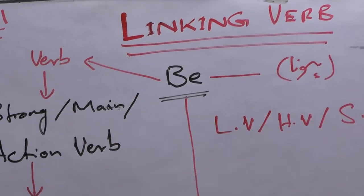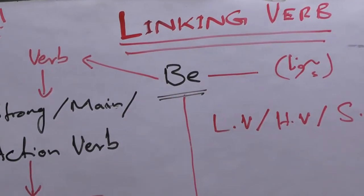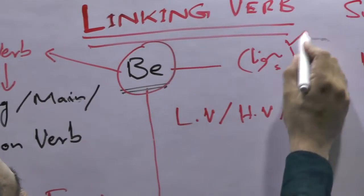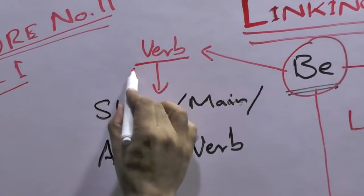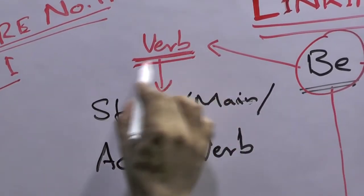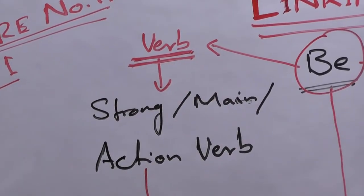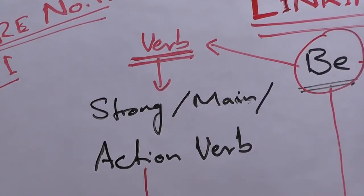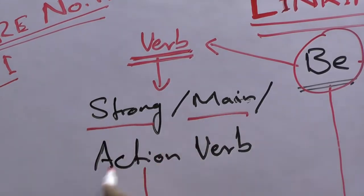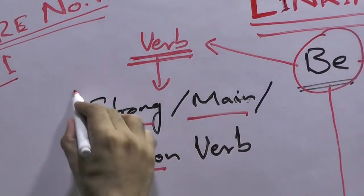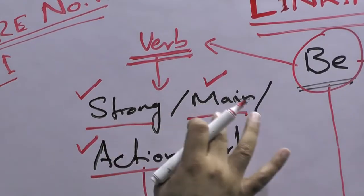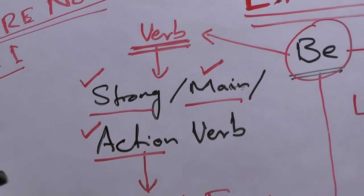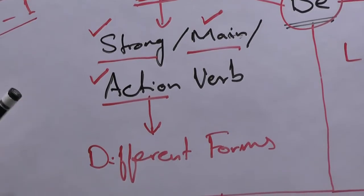The word in front of you is 'be'. Its meaning in Urdu is 'hona' — the state of existing. If we look at it from parts of speech, 'be' falls in the category of verb. Going further, it is a strong verb, also called a main verb or action verb. So 'be' is a strong verb, a main verb, and an action verb.